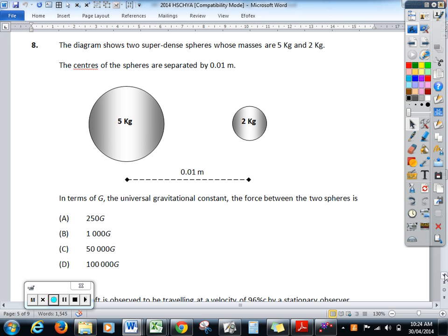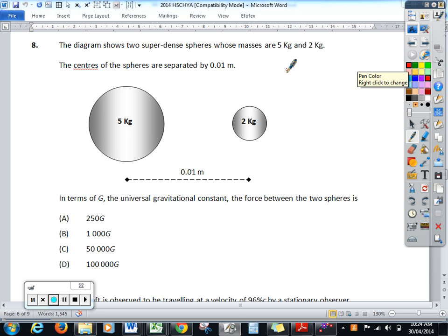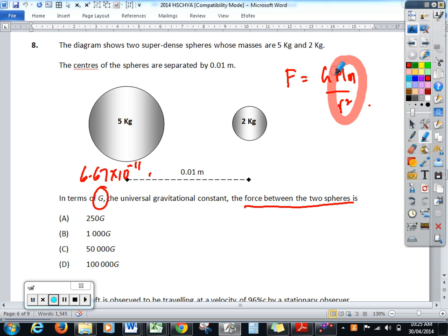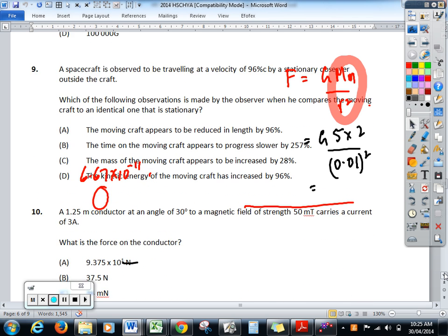This is simply using the formula of Newton's universal law. That the force between two spheres, the gravitational force, is equal to G mm on R squared. I'm not going to really do it. It says in terms of G. So, not putting in 6.67 by 10 to the minus 11 in here. So, you've just got to work out this part here using the values. So, it equals G 5 times 2 on 0.01 squared and whatever that comes out to be. What answer is that one? D.